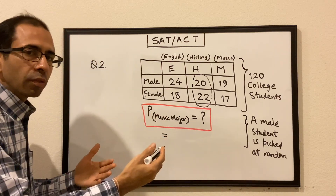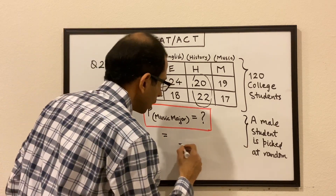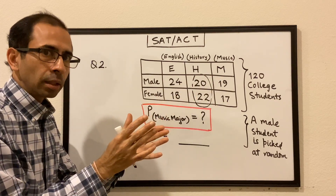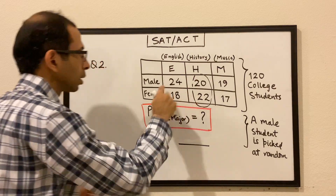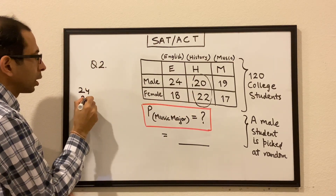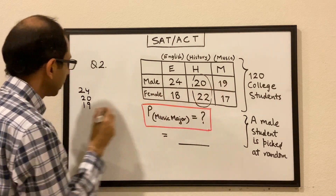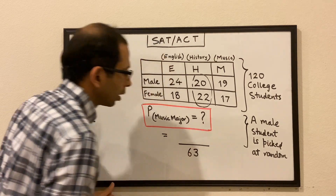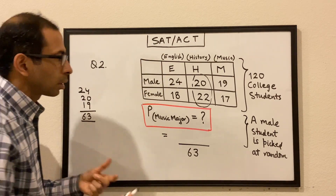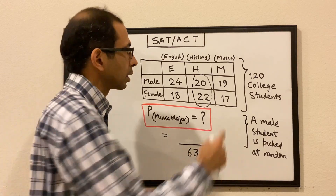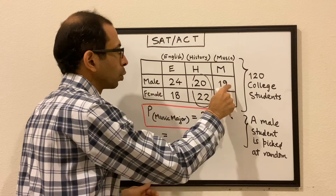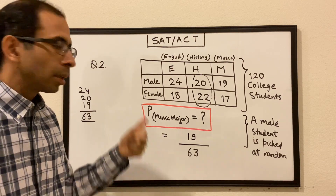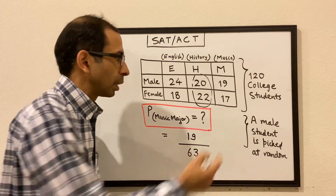The probability of finding a male student doing a music major is, again, number of favorable outcomes divided by the total number of outcomes. The total number of outcomes in this case would be total male students, because that's the given scenario. Total male students would be 24 plus 20 plus 19 which is equal to 63. So our denominator becomes 63, and the male students doing music major is 19. So the probability is 19 over 63.